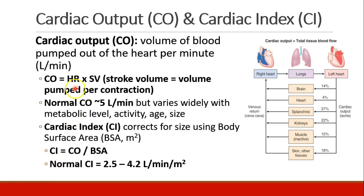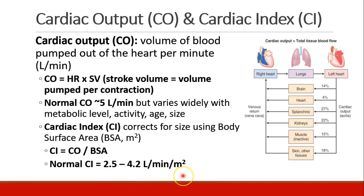So if cardiac output is in liters per minute, cardiac index is in liters per minute per meter squared, and a normal cardiac index in an adult is about 2.5 to 4.2 liters per minute per meter squared.